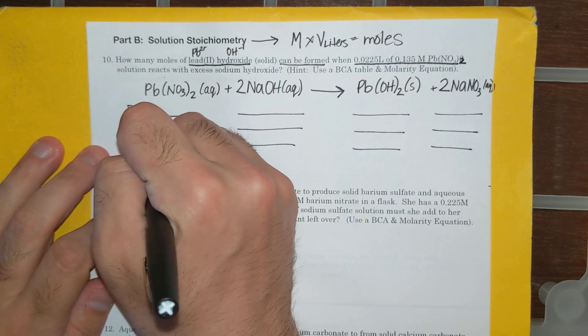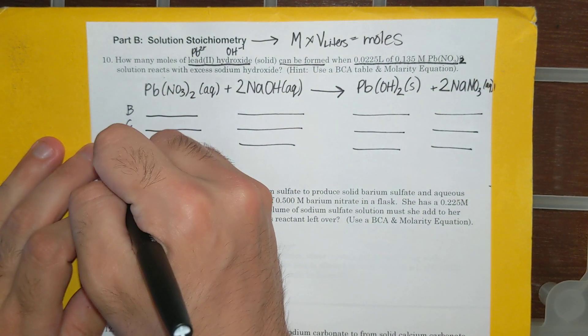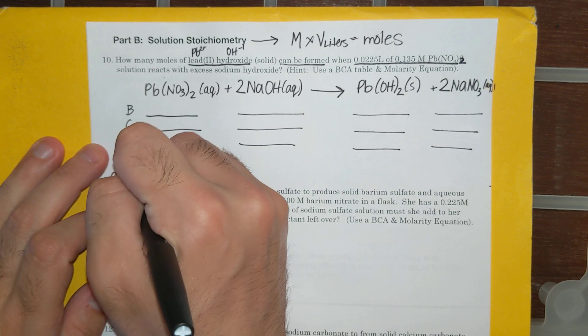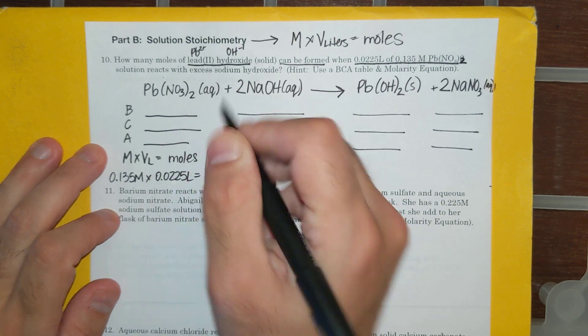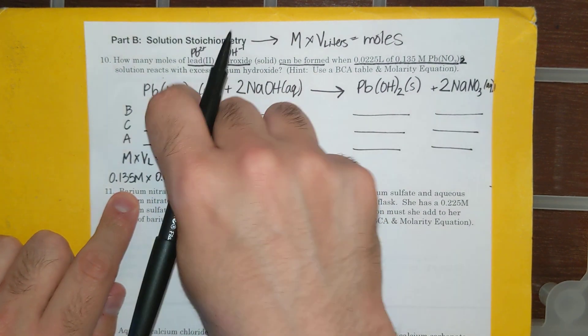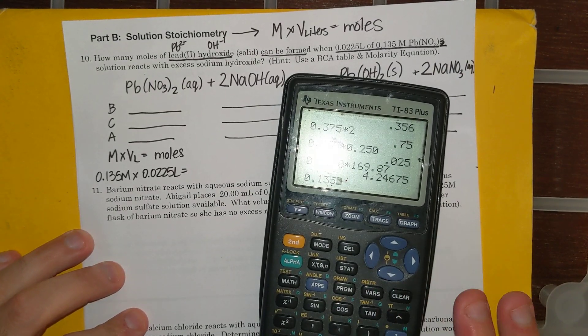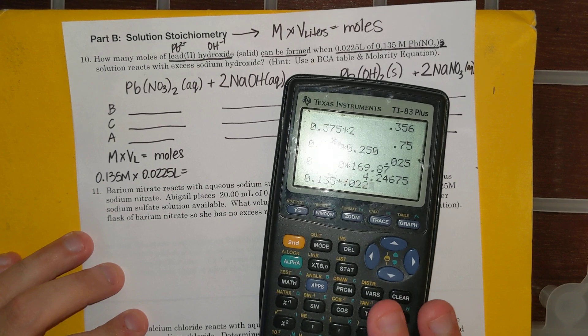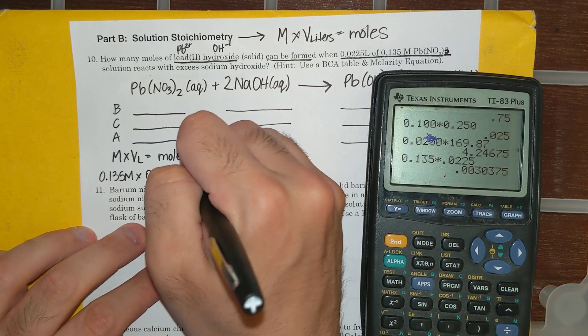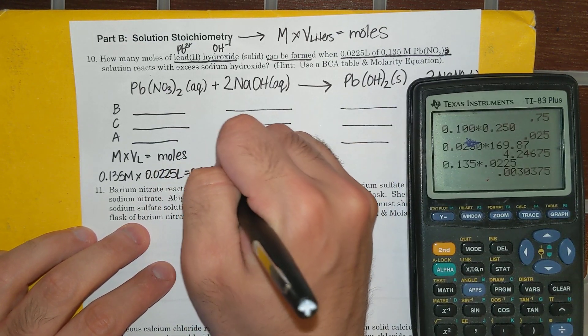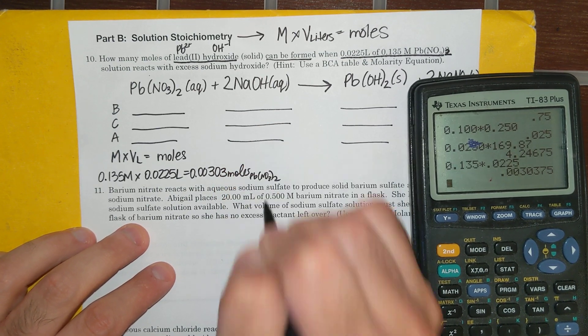Remember, molarity times volume in liters equals moles. That's my favorite equation. My molarity is 0.135 molar, and the volume they gave me was 0.0225 liters. If I multiply these two, I'm going to get moles, and I can throw it straight into my BCA table. So 0.135 times 0.0225, I get 0.00303 moles of Pb(NO3)2.